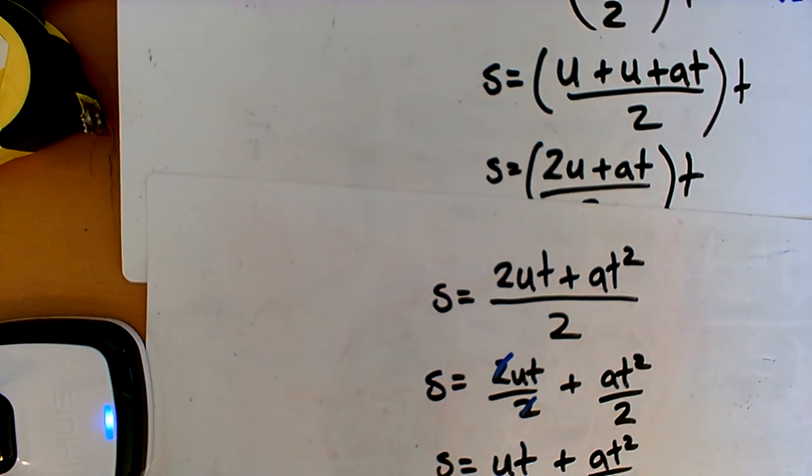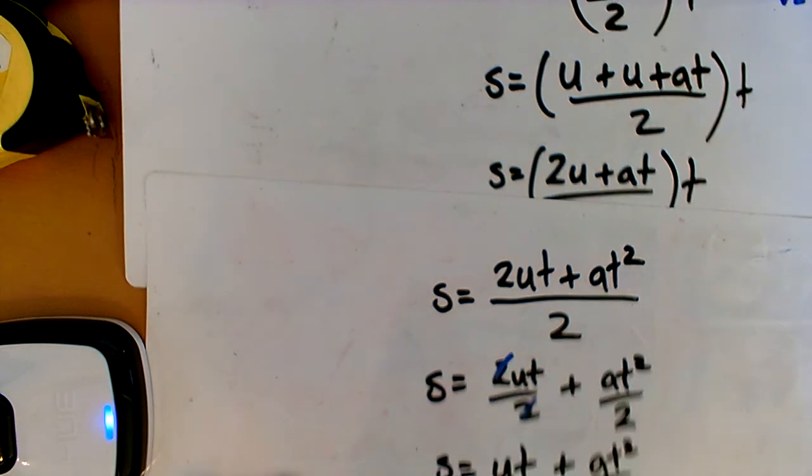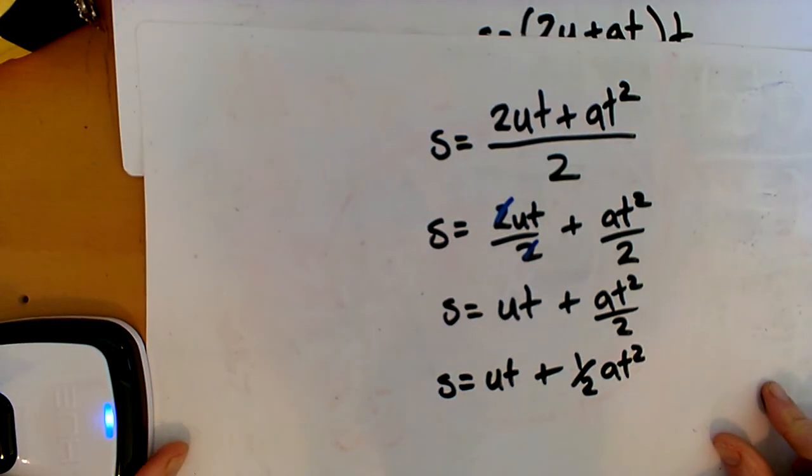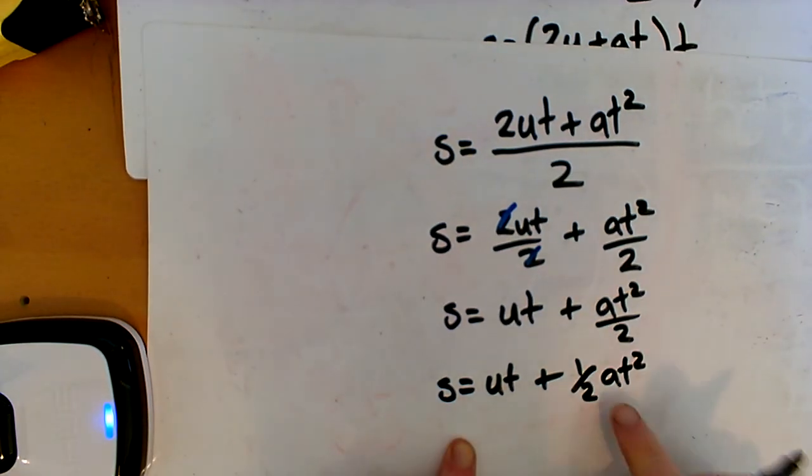So you just might not be used to seeing it that way. So we can just make it back to the way you do. Plus. I'm just going to pull that 1 over 2 out. And AT squared. These are exactly the same thing. Oh, sorry. You can't see that. So these are exactly the same thing. It's just a different way of writing it.